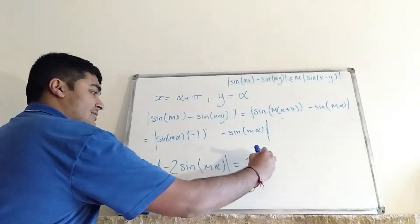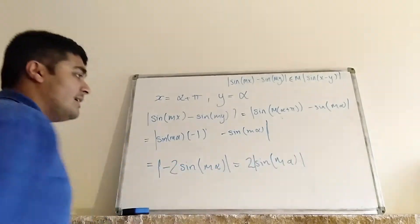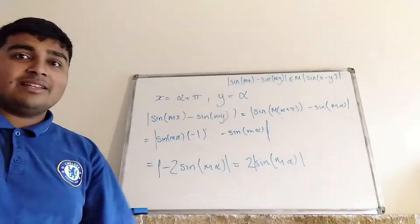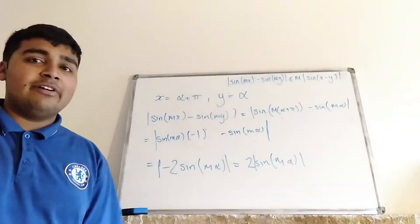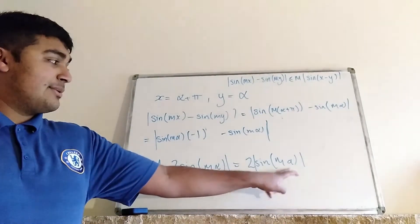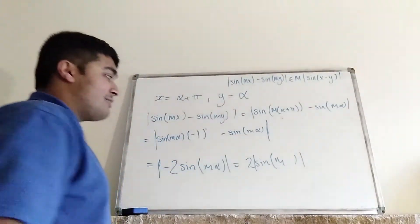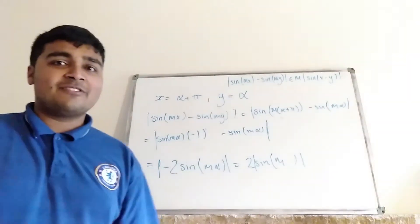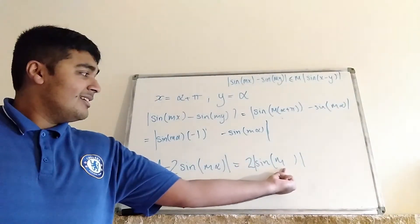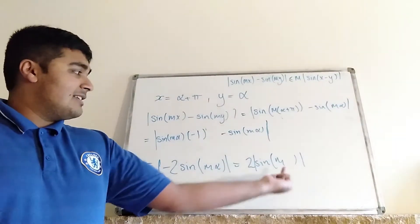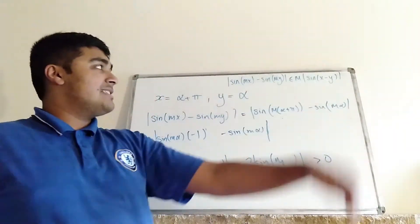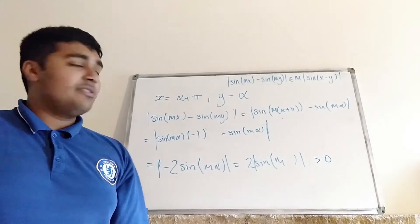And of course we can just write that as 2·sine(mα). Now all we need to do — remember we're allowed to choose alpha — is ensure that mα is not a multiple of π. There are lots of different choices for that, but if we choose alpha equals 1, this actually works for all m. So we have 2 times the absolute value of sine(m). Because this thing is only zero when the input is a multiple of π, and m is an integer, this is always going to be non-zero. So this thing is positive, and because the right-hand side is zero, this is a counterexample for the case where m is odd.